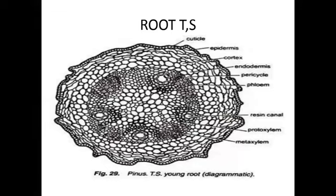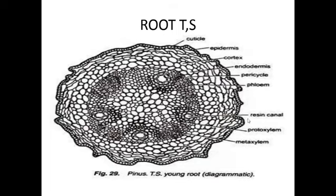Below the pericycle, vascular tissues are arranged in a radial position. The vascular tissues are called phloem and xylem, and the xylem and phloem tissues are arranged in a radial position. The xylem is of two types: one is protoxylem and one is metaxylem.